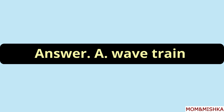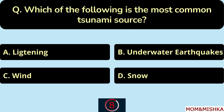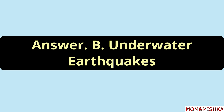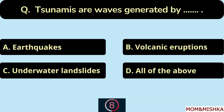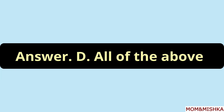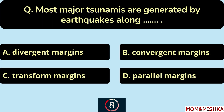During a tsunami, a series of waves radiating outward from a central disturbance of the sea floor is called a wave train — option A. The most common tsunami source is underwater earthquakes — option B.